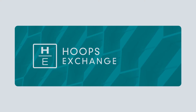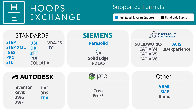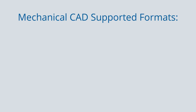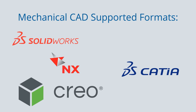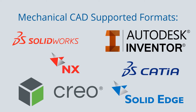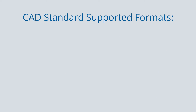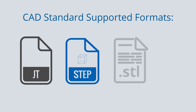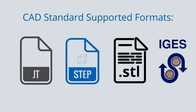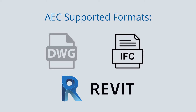Our Hoops Exchange SDK provides developers with the ability to read and write popular 2D and 3D CAD file formats, allowing teams to quickly gain access to over 30 engineering file formats, including mechanical CAD such as CATIA, NX, CREO, SolidWorks, Inventor, and Solid Edge. CAD standards like JT, STEP, STL, and IGES, and AEC formats like Revit, IFC, and DWG.